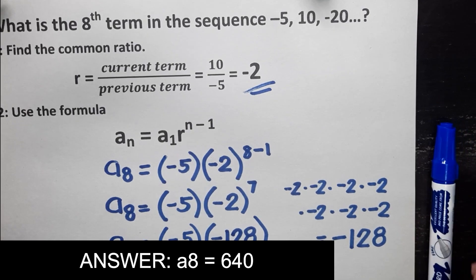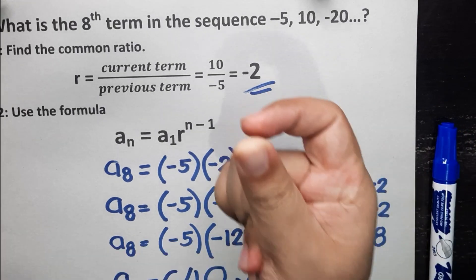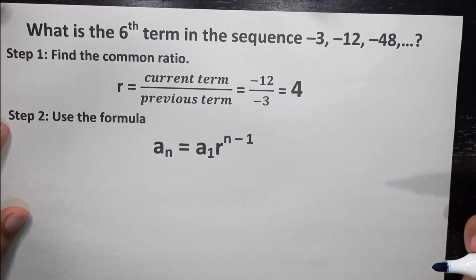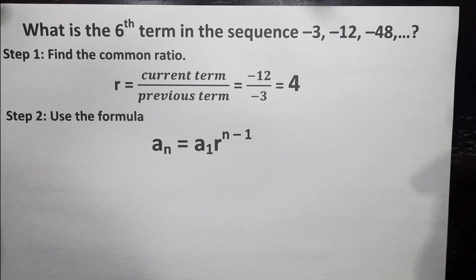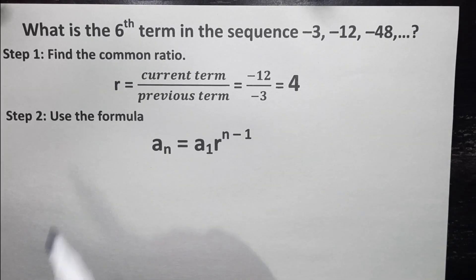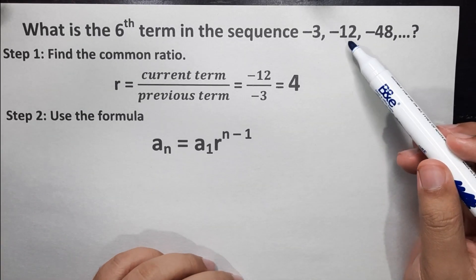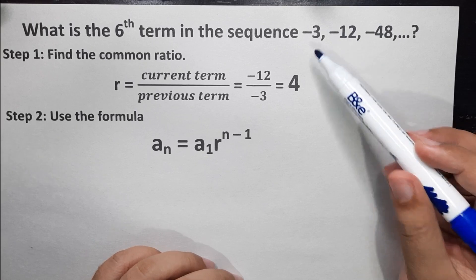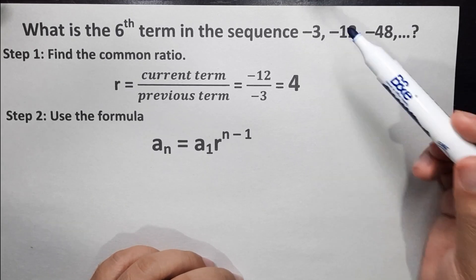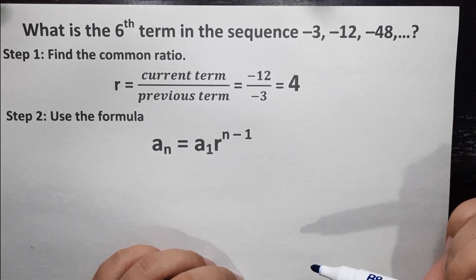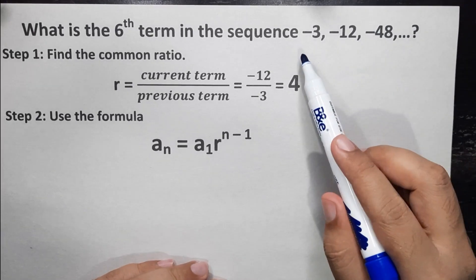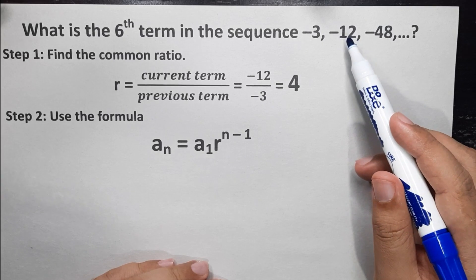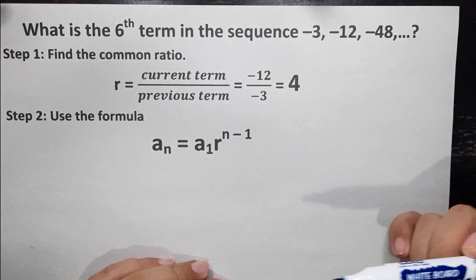For our last example: what is the 6th term in the sequence negative 3, negative 12, and negative 48? Let's find the common ratio. Using negative 12 as the current term and negative 3 as the previous term, negative 12 divided by negative 3 gives us positive 4 as our common ratio. Negative 3 times 4 is negative 12, times 4 is negative 48 — that's correct.